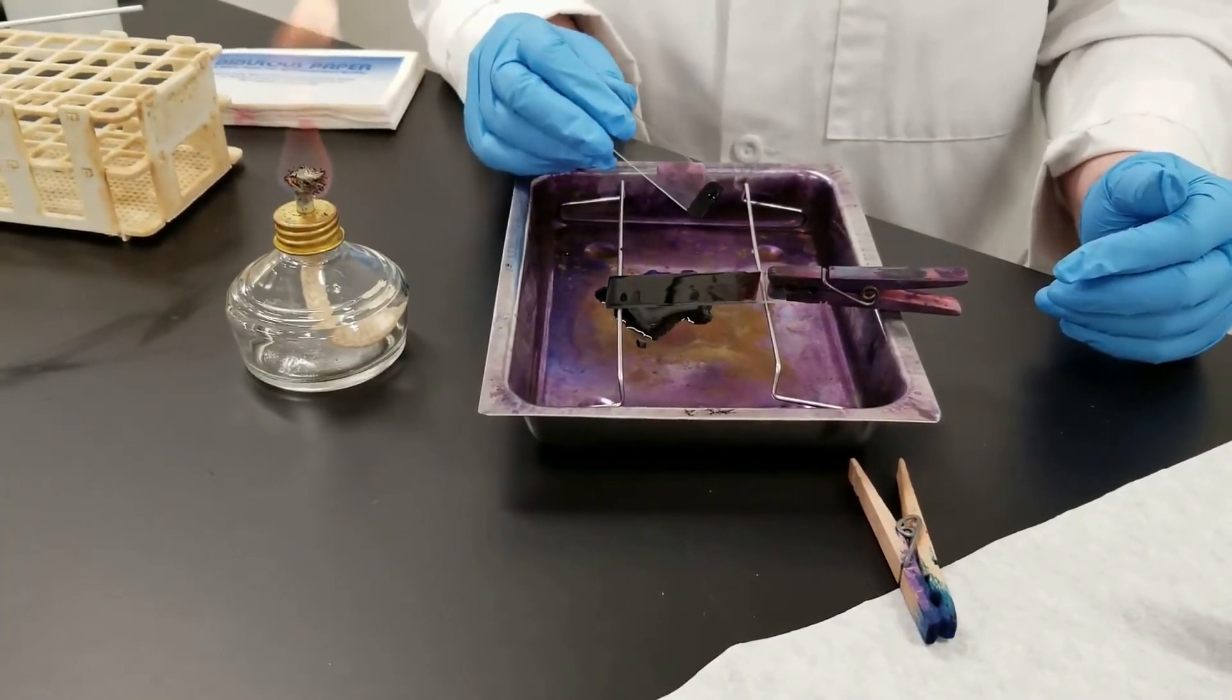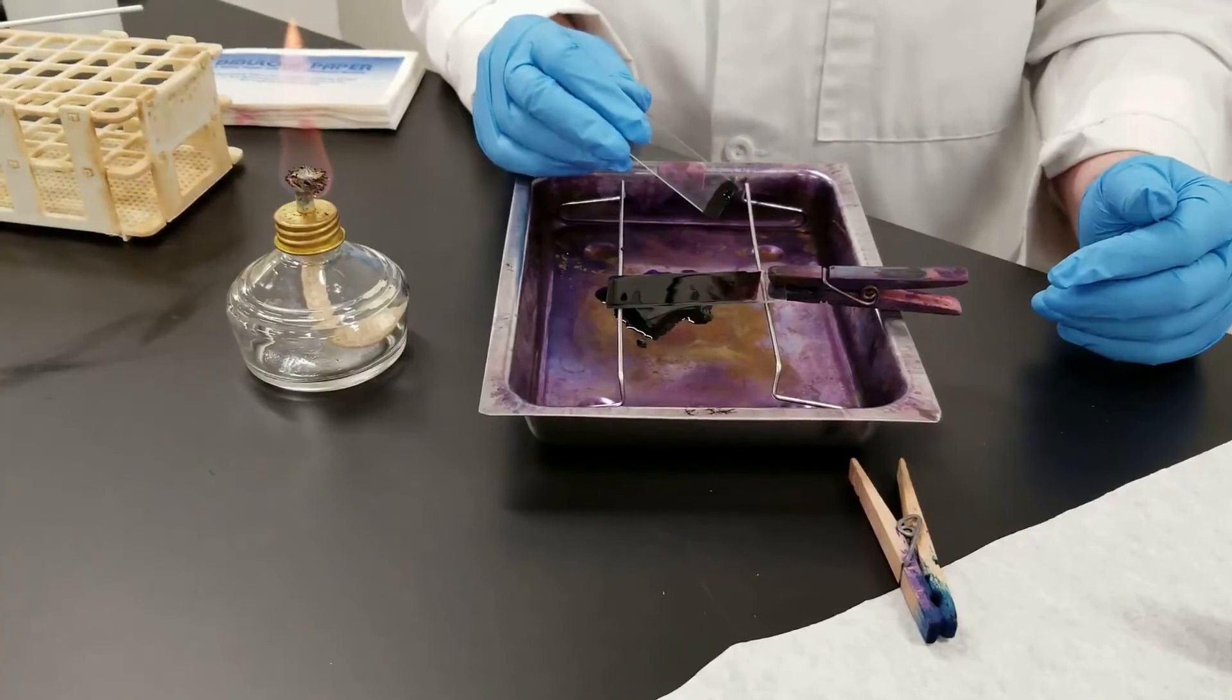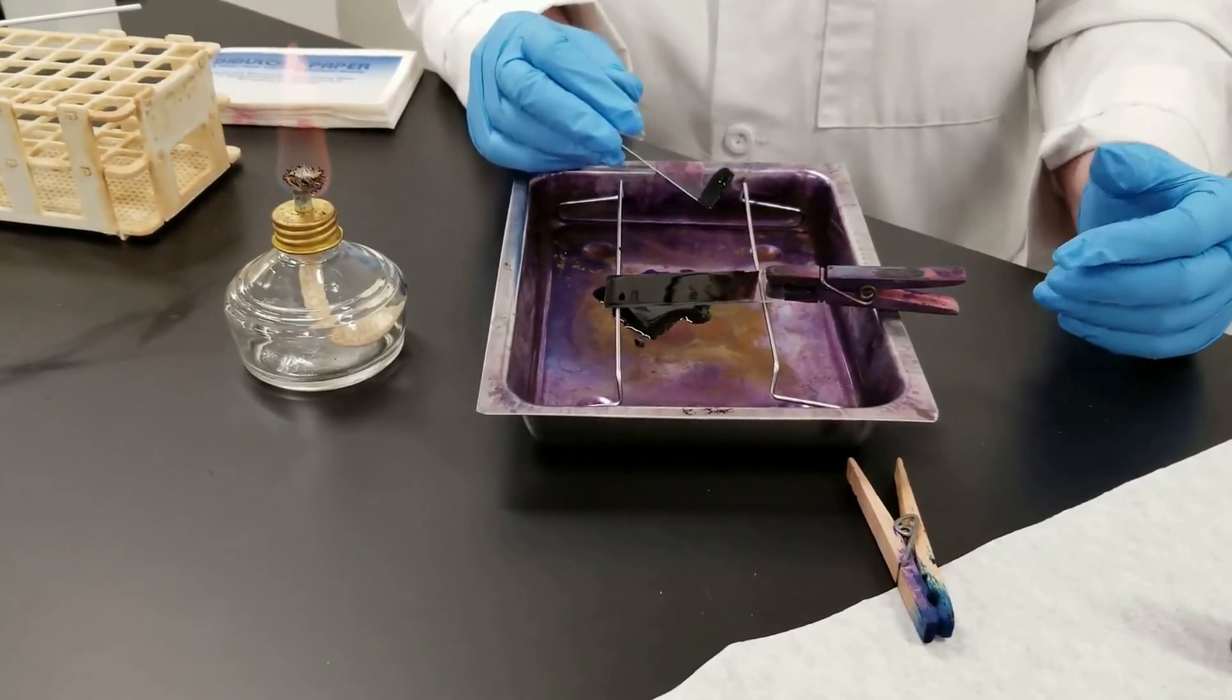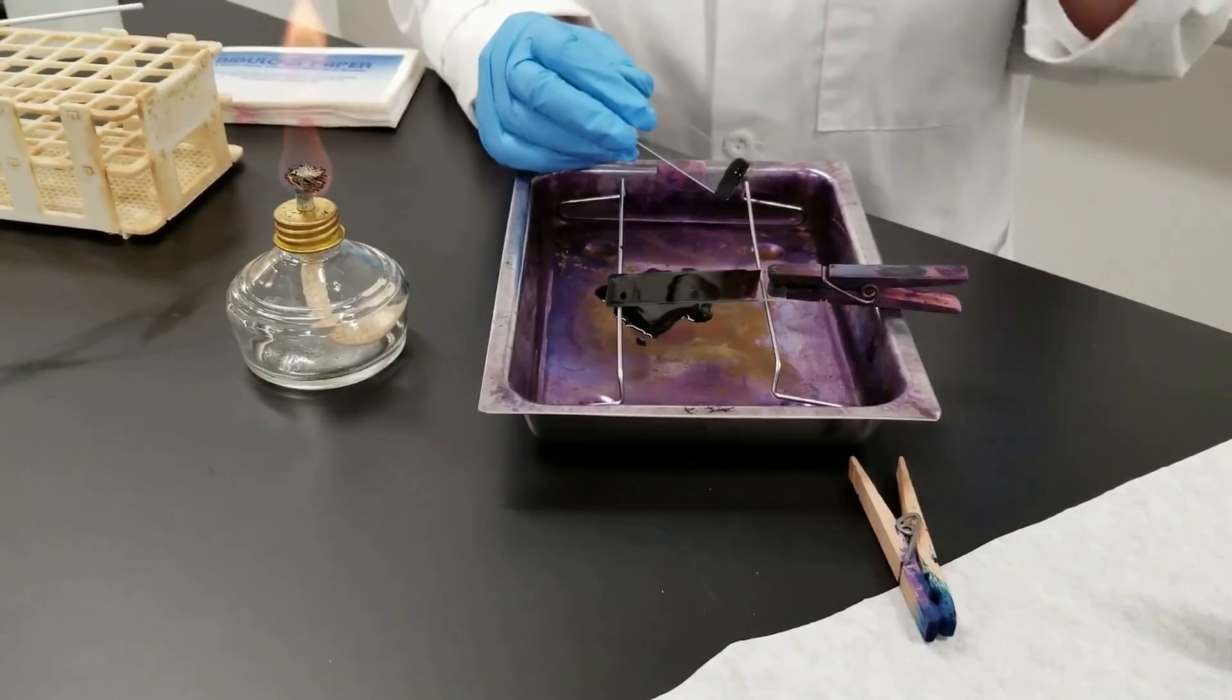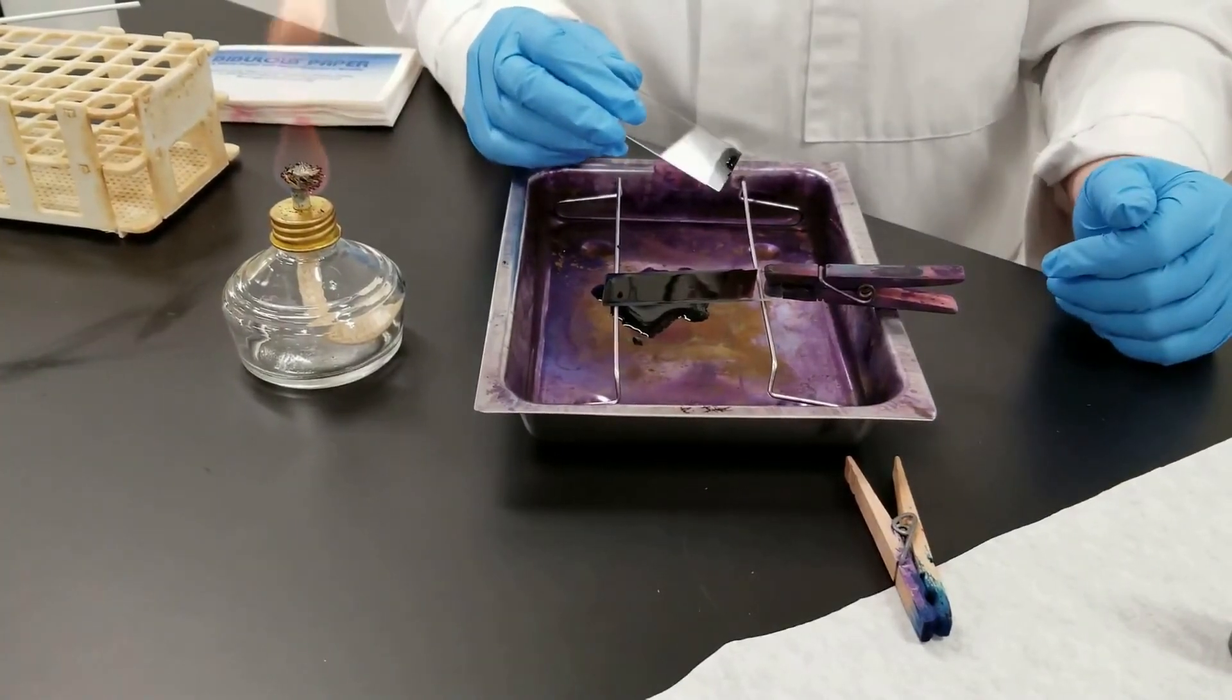Once it has air dried, then we will look at it under the scope. The background will be black and the bacteria will be clear or colorless along that background.